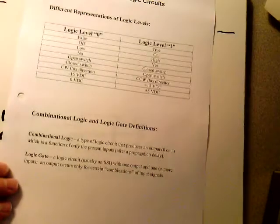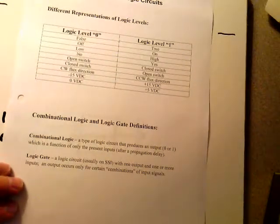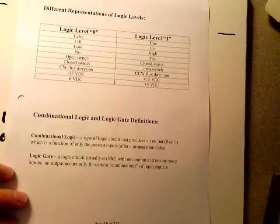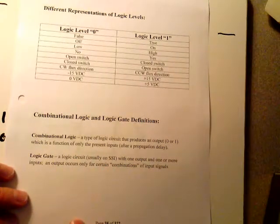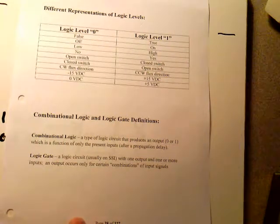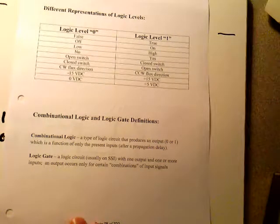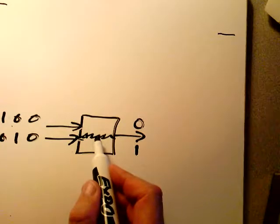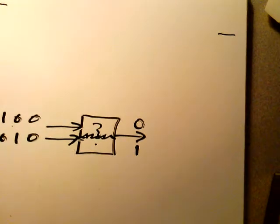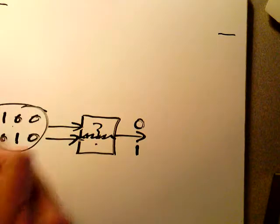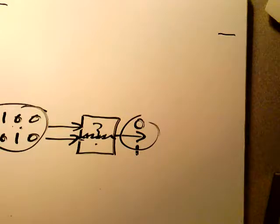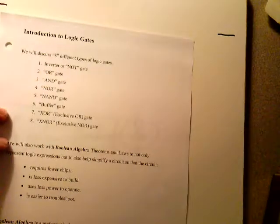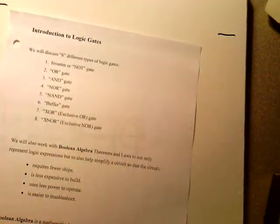Logic gates — what do we mean by a logic gate? We're going to talk about eight of them in the next three lectures. Logic gates are logic circuits, usually small scale integration — we talked about that in the first lecture — with one output and one or more inputs. The output occurs only for certain combinations of input signals. If you look next on page 39, we're going to talk about introduction to gates. We'll discuss eight different types of logic gates, and that's all there is to discuss in digital design.